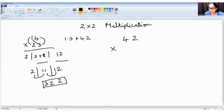42 x 33. So the left portion of the answer is obtained by 4 x 3 is 12.